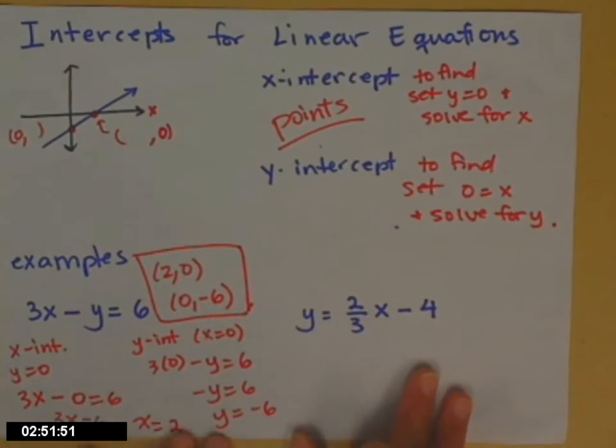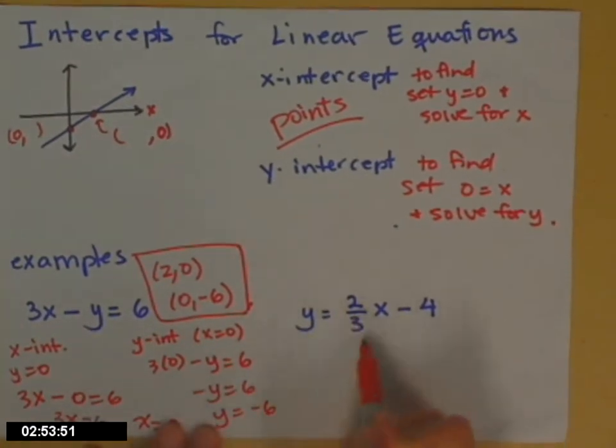Here we go. Okay, second example. y equals 2/3 x minus 4. This equation is put into the slope-intercept form. So you could actually read off the y-intercept for this one, if you remember that part.